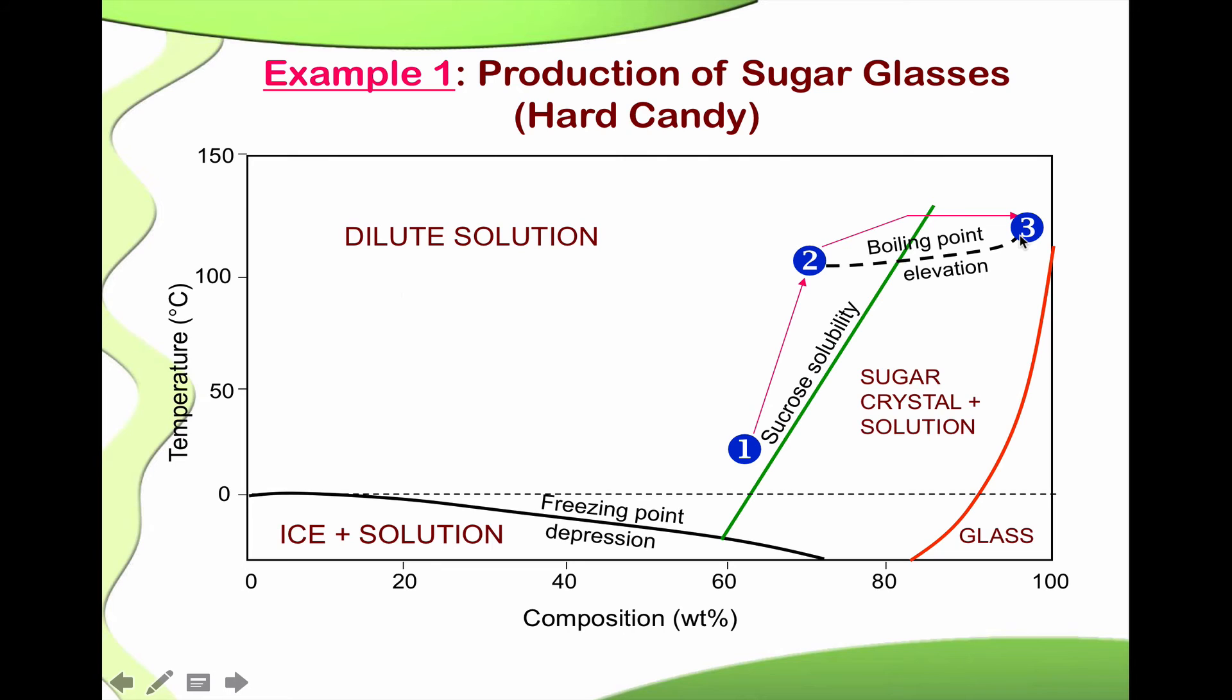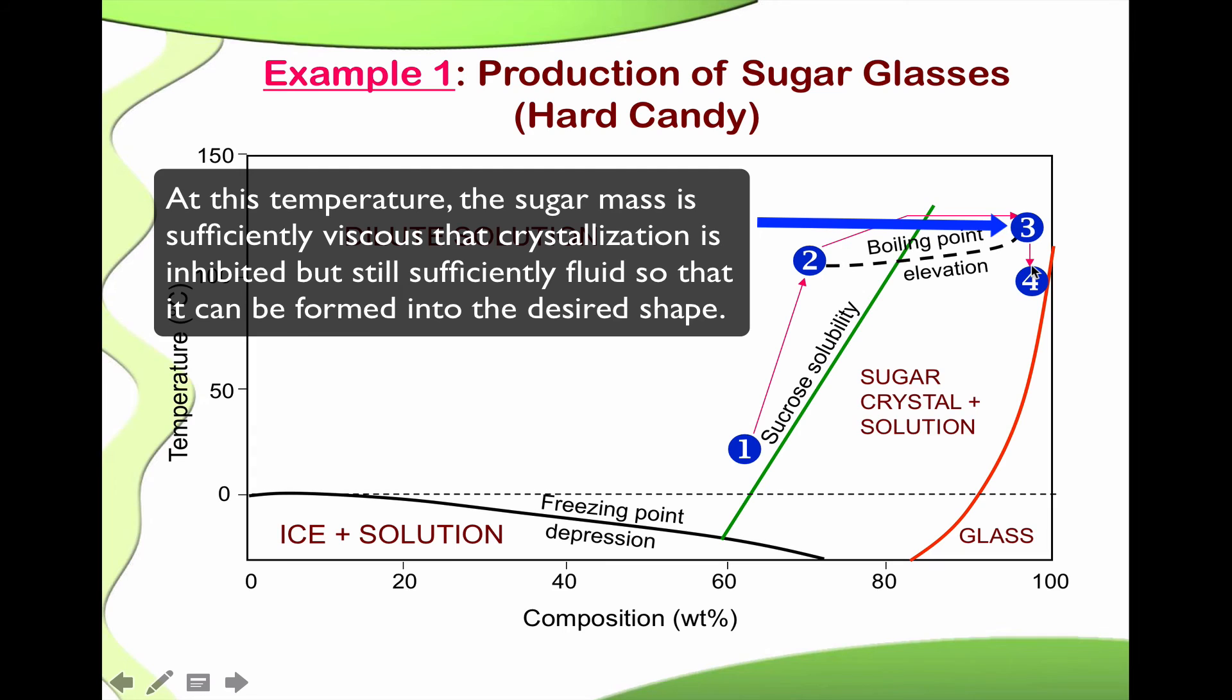Then, we cool it down around 75 to 80 degrees Celsius. The reason why we cool it down to around 75 to 80 degrees Celsius is to allow the mixture, the sugar mass, to be still in the state that is not yet formed solid. It is actually highly viscous but still can be formed into the desired shape.